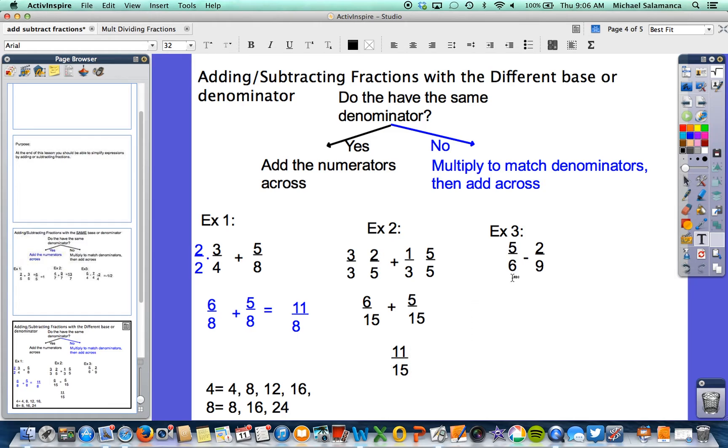Example 3, we have 5 sixths minus 2 ninths. So notice these two have very similar numbers, which means their multiples should run into each other. So we'll make a list to make it easier. So it's 6, 12, 18, 24, 30, and there's more. For 9, it is 9, 18, 27, and 36. But you'll notice they have an 18 in common. So that's what we need to shoot for.